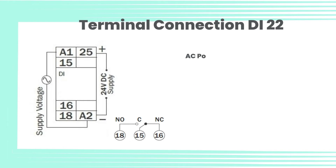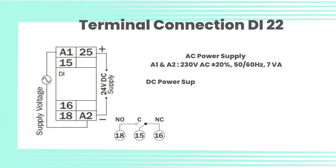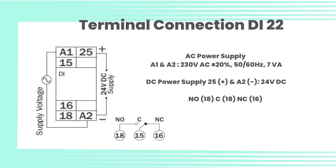Terminal connection DI22. AC power supply: A1 and A2, 230V AC ±20%, 50/60 Hz, 7W. DC power supply: A1(+) and A2, 24V DC. Relay terminals: NO-18, C-18, NC-16.